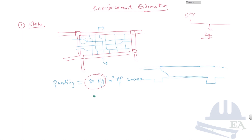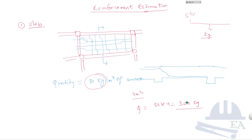For example, if it is 4 meter cube of concrete, then the total quantity will be equal to 80 times 4, which is equal to 320 kg. As mentioned, this method is not an accurate method — it is just a rough idea.